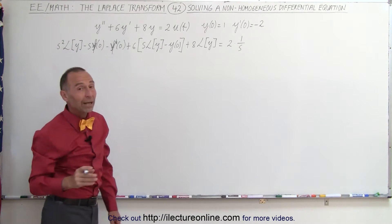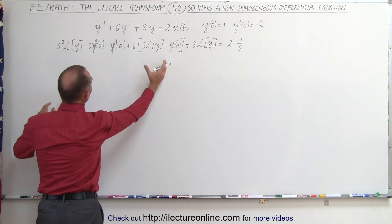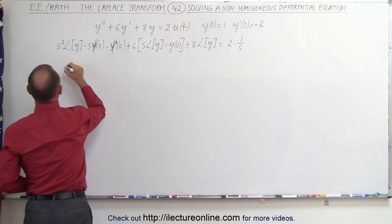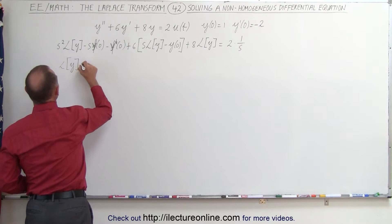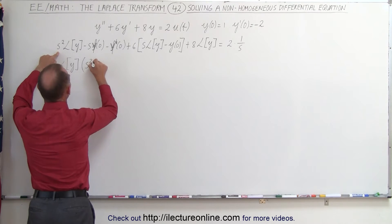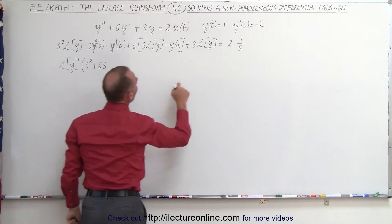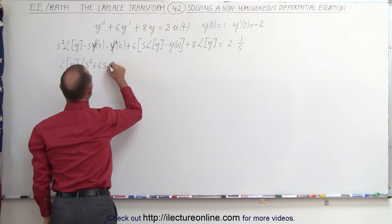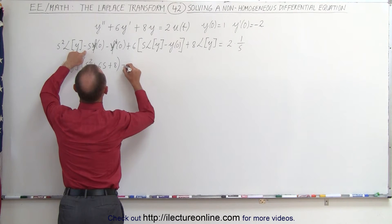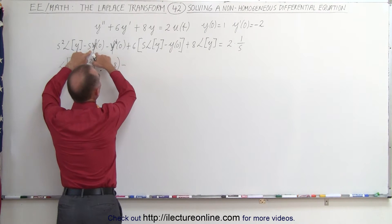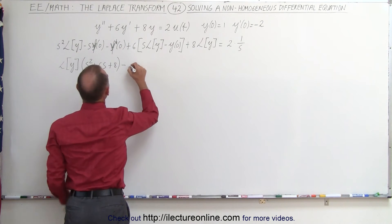Now we're ready to solve for the Laplace transform of y. On the left side we can factor out L{y}, giving us L{y} times s squared plus six s plus eight. On the left side we also have minus s times the function evaluated at zero, which equals one, so that becomes minus s.